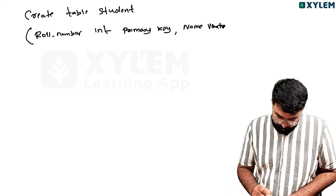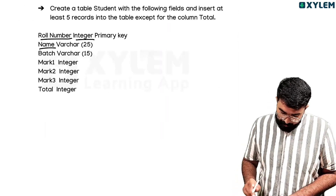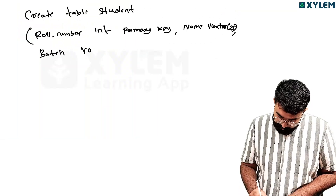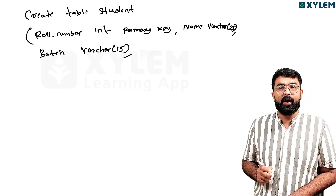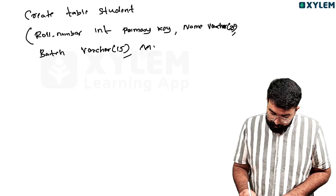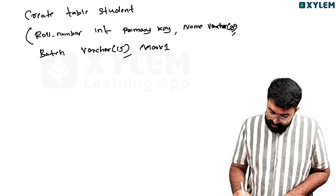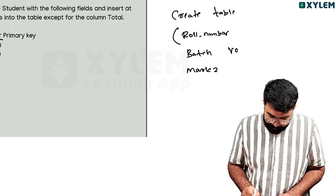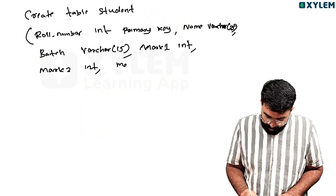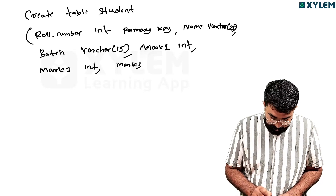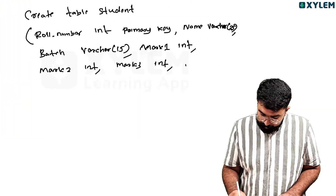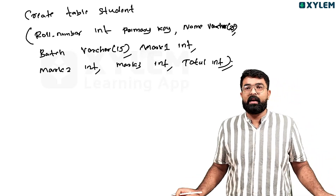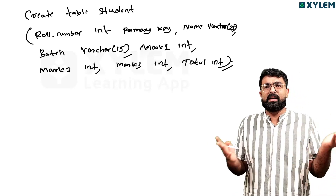Then comma, next is batch as varchar of 50. Then mark1 as int, mark2 as int, mark3 as int, comma, and the next one is total as int. This is the CREATE TABLE statement - it's created, okay.